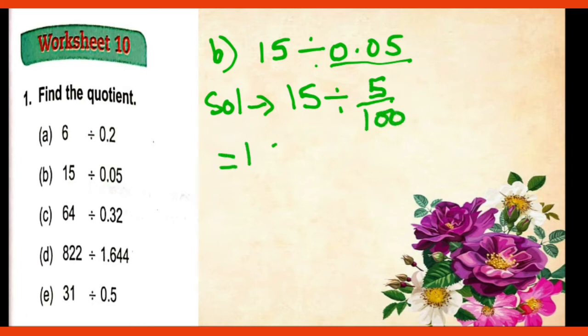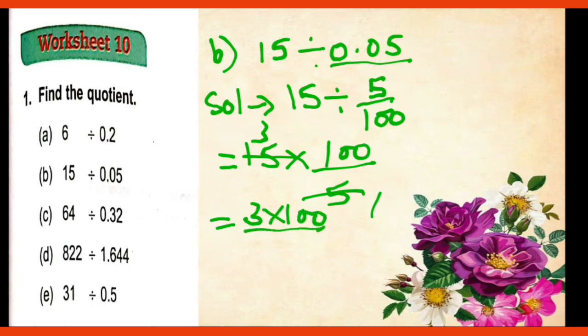And it is like 15 multiplied 100 upon 5. Then common factors we'll cut, 5 and 5. 5 3s are 15. So 3 multiplied by 100 upon 1. And this is 300 upon 1. That is 300 is your answer.